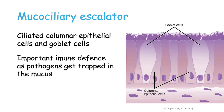For this to happen, the mucus must have a certain fluidity to allow the hair-like structures to move, and this is what the CFTR essentially does — it allows water to leave the cell and make the mucus more fluid.